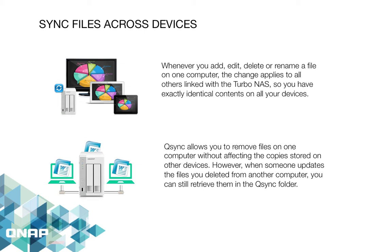Whenever you add, edit, delete, or rename a file on one computer, the change applies to all other devices linked with the NAS. So if you have a file open and you do some editing that you didn't want and you accidentally save it, it syncs across all platforms — whether you view it at home, on your computer, or on your iPhone, the file is changed. But there is another feature that lets you go back to a previous version — it's called versioning control. QSync actually makes backups of all the files you're manipulating or changing at all times.